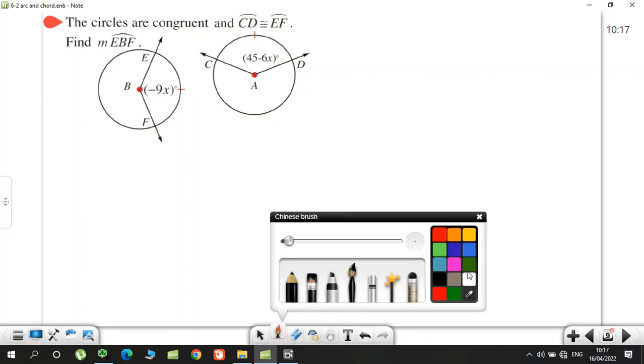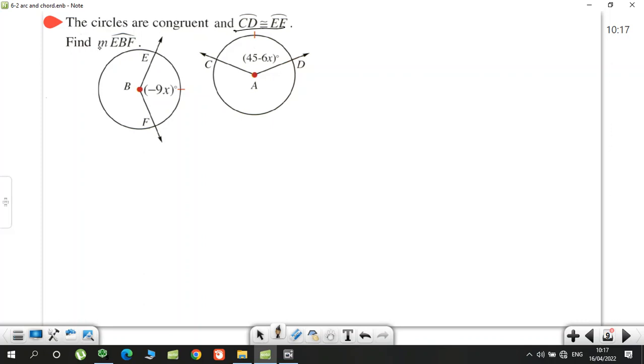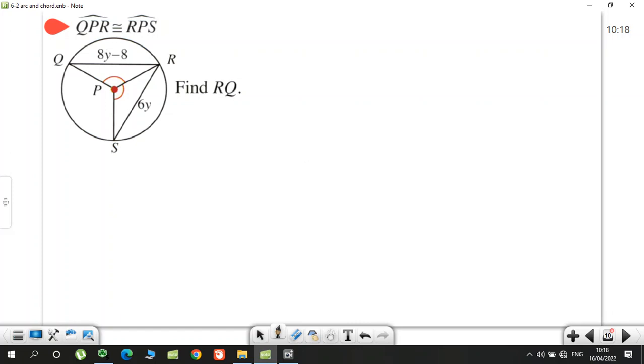Again, the circles are congruent. When the circles are congruent and the arcs are given congruent, as you see, measure of EBF, this is the question. The congruent circles, so the arcs are congruent. This mean -9x equal 45 - 6x. So plus 6x, plus 6x, -3x equal 45, X equals, sorry, -3x equal 45, X equal -15. So the question asking about EBF, this angle. So measure of EBF, it's equal -9x. -9 times -15, that's negative times negative will be positive, 135 degrees. 9 times 15 is 135. I add lots of examples for this section.